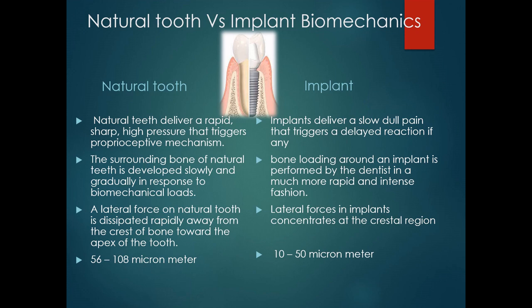When there is occlusal trauma, the tooth moves to dissipate stresses and strains, and after the offending trauma is eliminated, the tooth returns back to its original position within the limits of movement that took place. Whereas in the case of an implant, mobility can occur under occlusal trauma, but when the offending trauma is eliminated, an implant rarely returns to its original position — instead, failure occurs. These are some of the key points under natural tooth versus implant biomechanics.